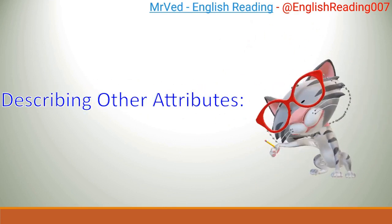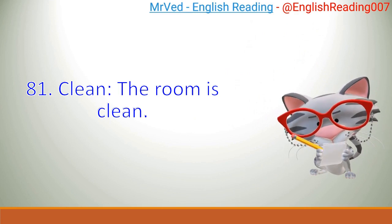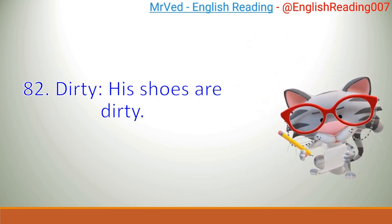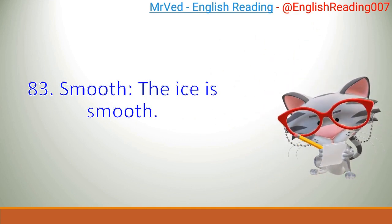Describing Other Attributes. 81. Clean. The room is clean. 82. Dirty. His shoes are dirty. 83. Smooth. The ice is smooth.